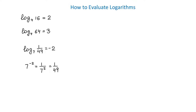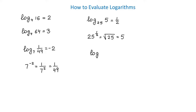In the next example, we evaluate log base 25 of 5. 25 to what power is equal to 5? That would be 1 half, because 25 raised to 1 half is the same as the square root of 25, which equals 5. Now let's evaluate one more logarithm: log base 9 of 1 over 9. Then 9 to what power is 1 over 9? That would be negative 1, because 9 raised to negative 1 equals 1 over 9.